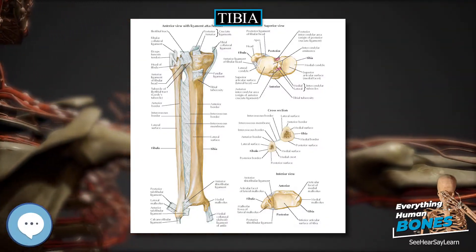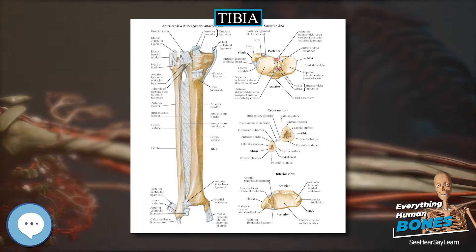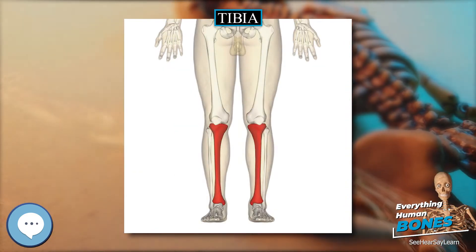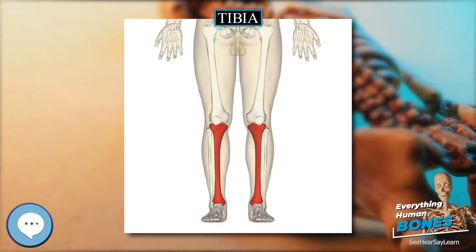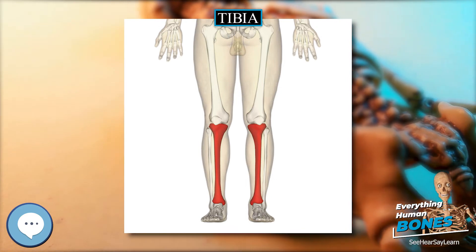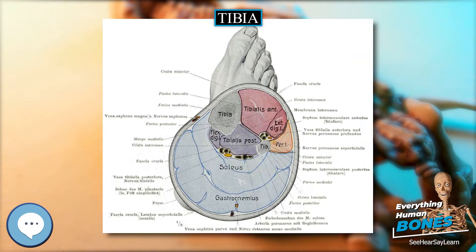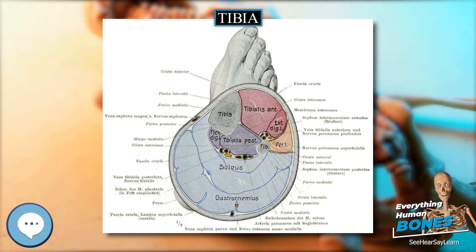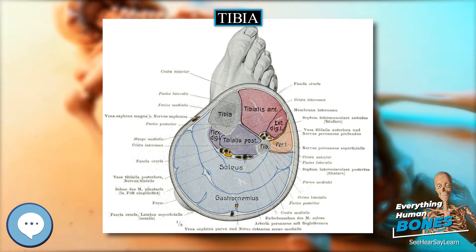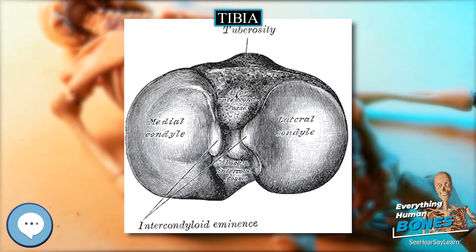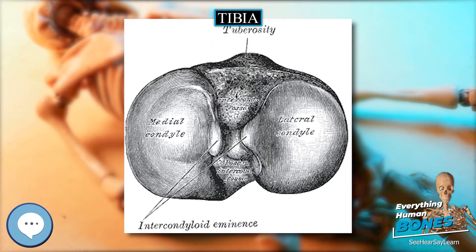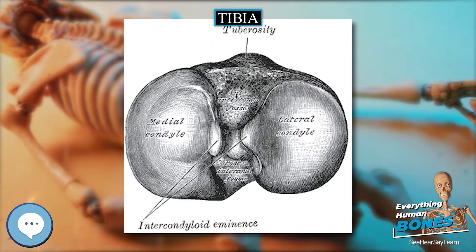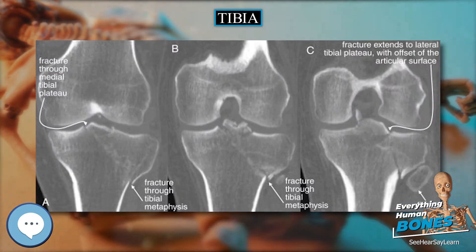Tibia. The tibia, plural tibiae or tibias, also known as the shinbone or shankbone, is the larger, stronger, and anterior (frontal) of the two bones in the leg below the knee in vertebrates, the other being the fibula, behind and to the outside of the tibia, and it connects the knee with the ankle bones.